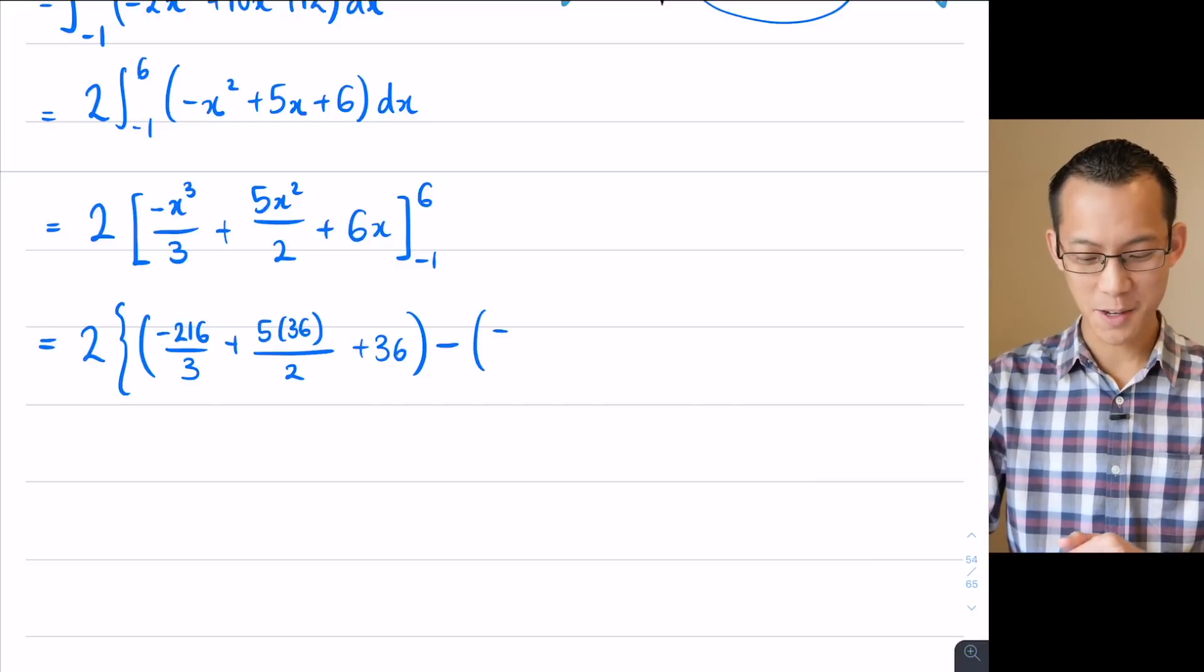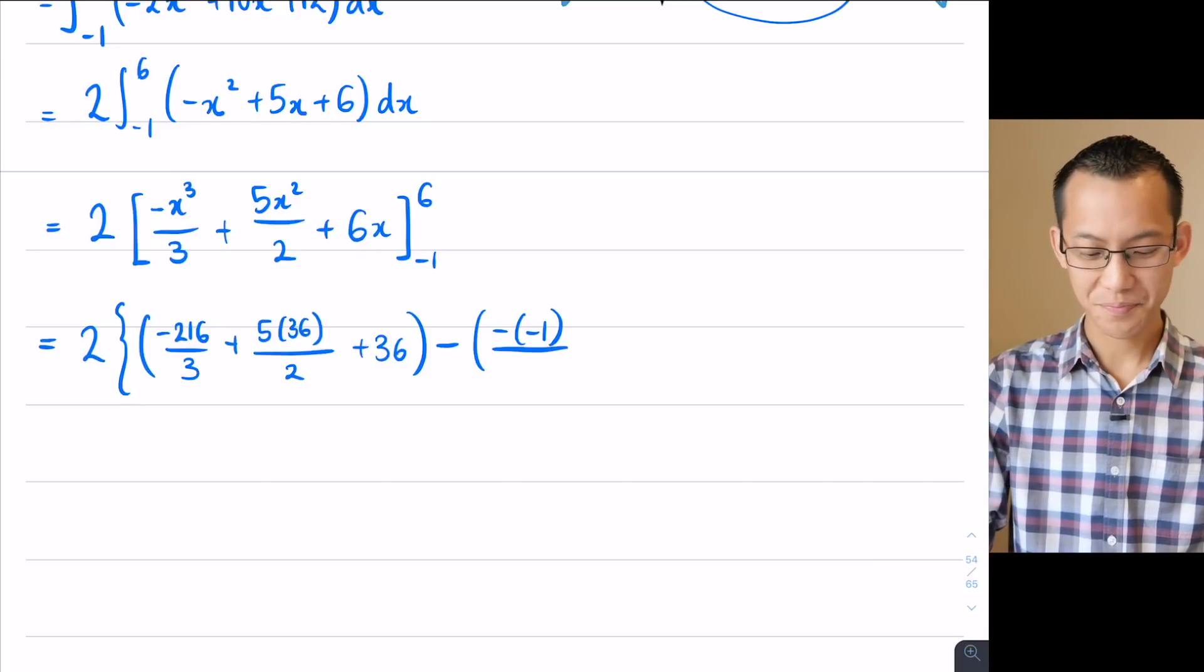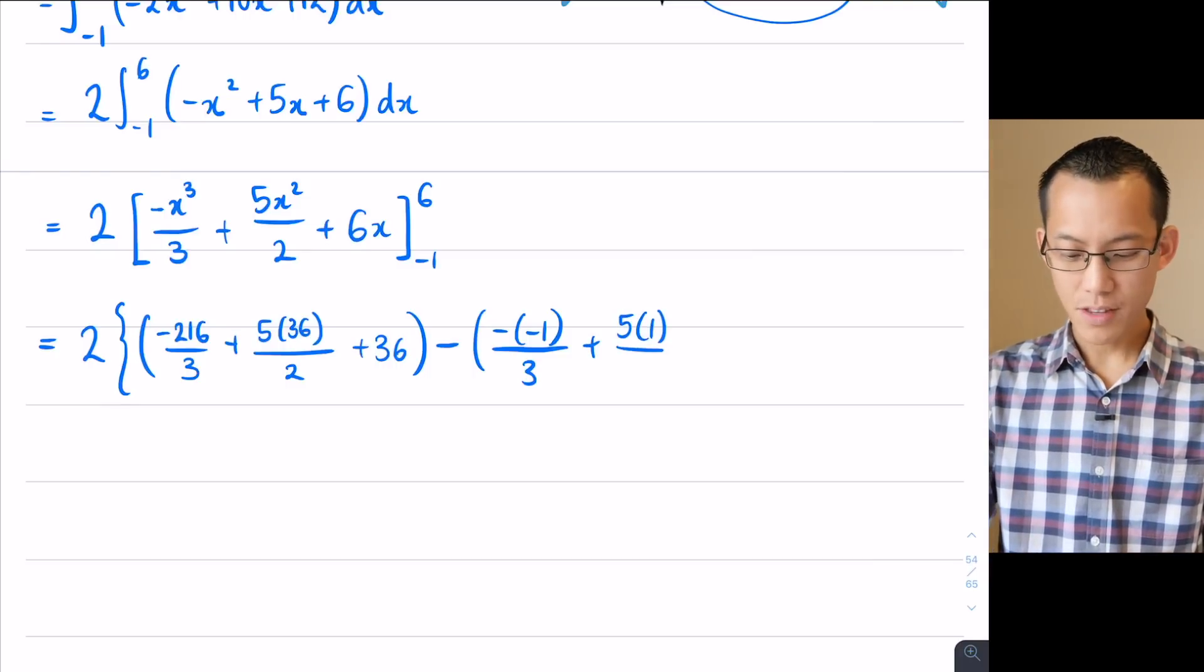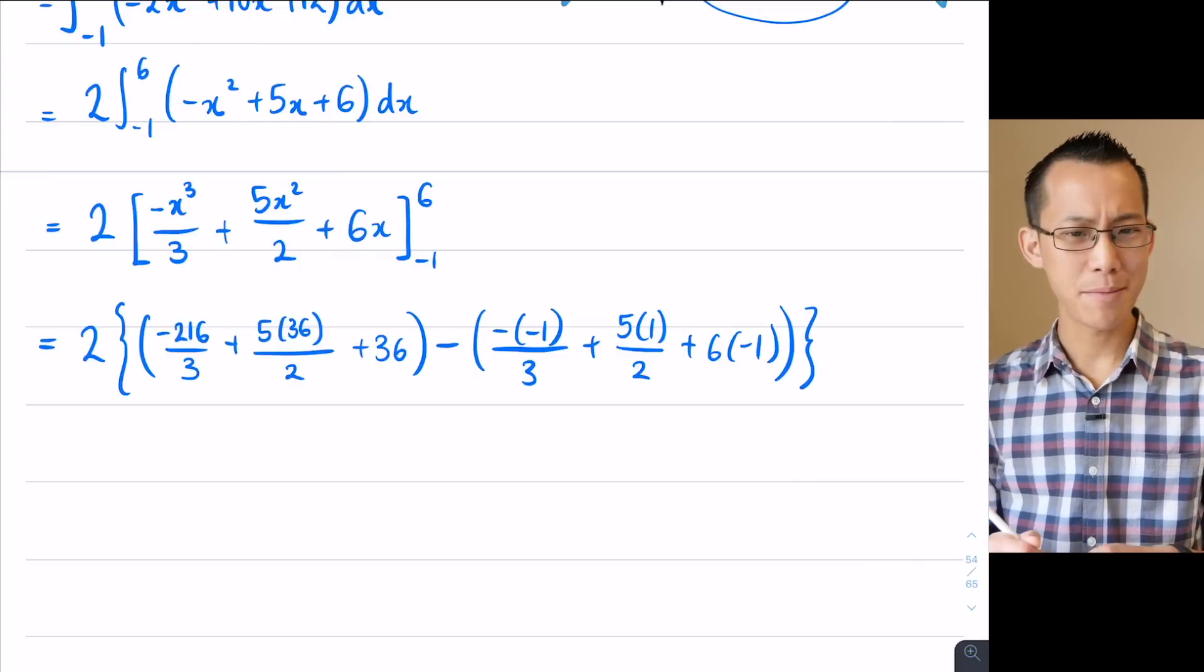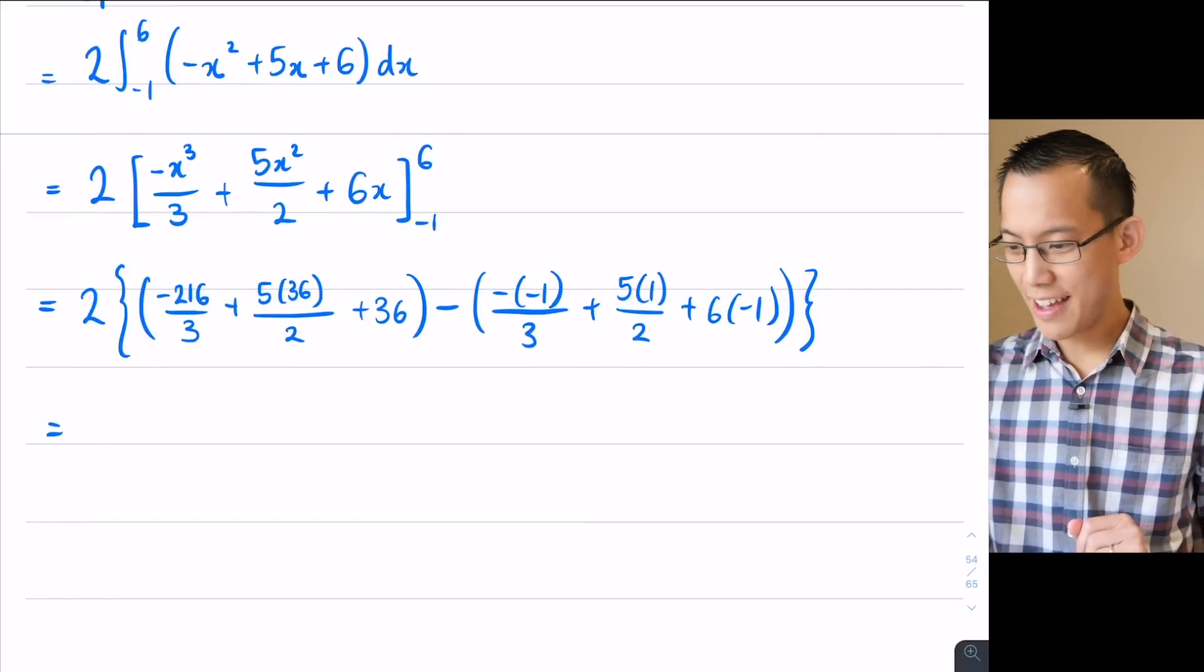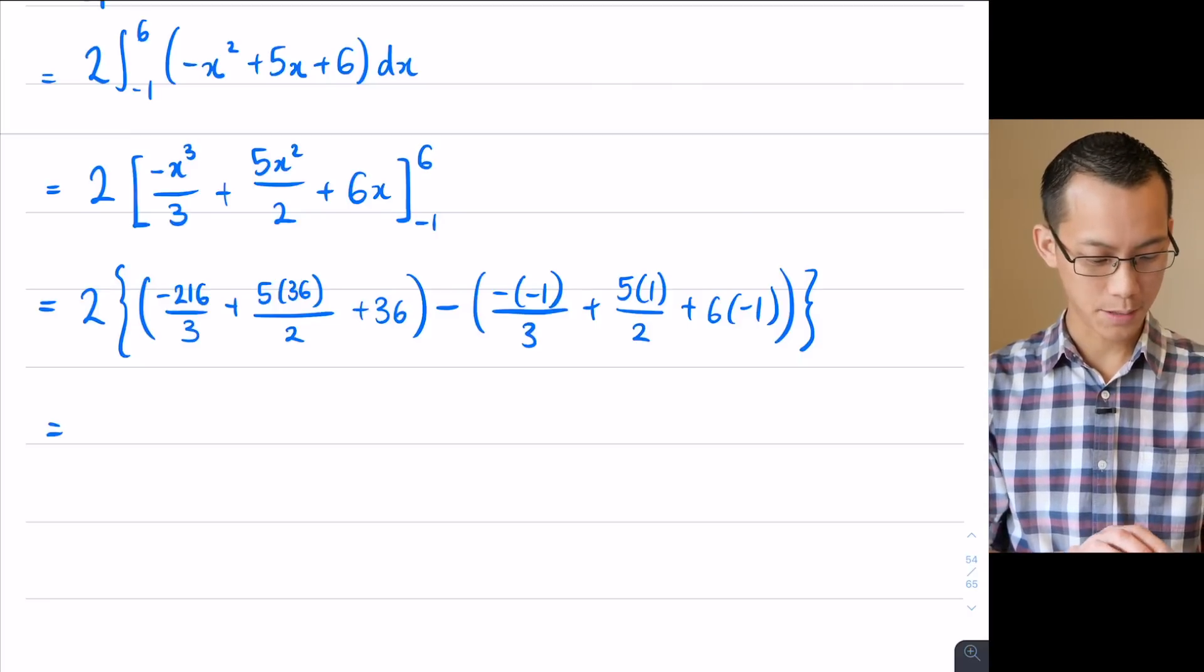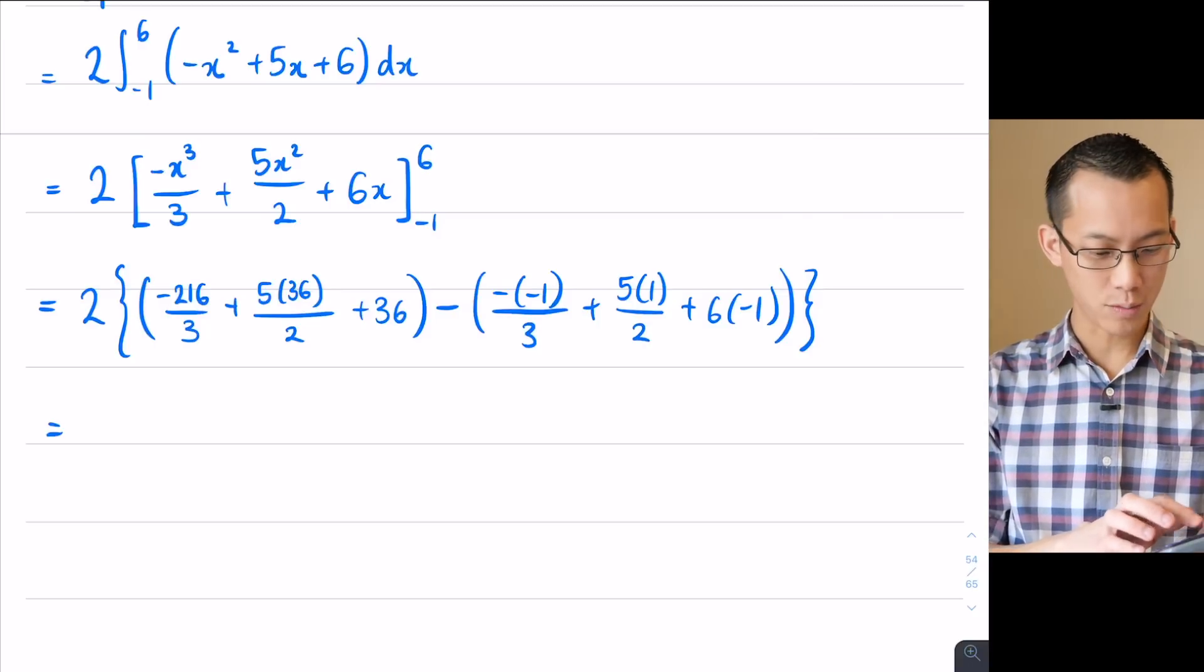So let's put in negative 1 now. I've got negative, watch out, there's a minus x cubed there. So now I've got negative 1 cubed, which is negative 1. That's divided by 3, plus 5 lots of negative 1 squared. I'm going to put that 5 back up the top, which is 1. All divided by 2, and then 6 lots of negative 1. And I'm going to end my curly brace. So at this point, you're probably going to reach for your calculator. In fact, I'm going to reach for my calculator. And let's see what you get. See if you crunch your numbers and get exactly the same thing that I do. Let's go ahead and evaluate this.